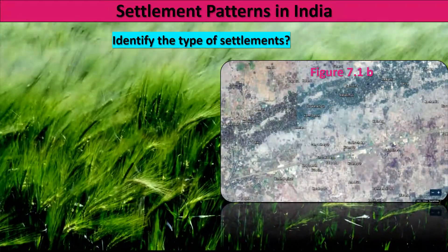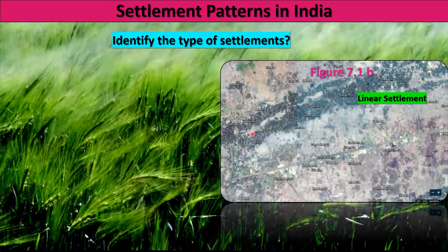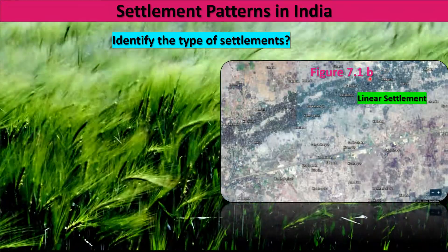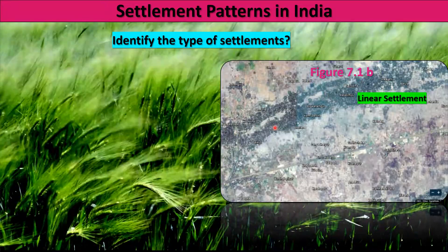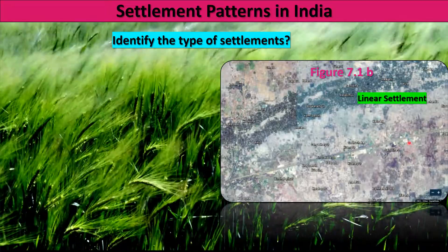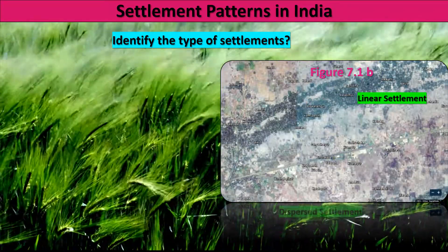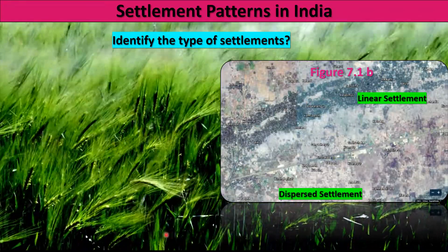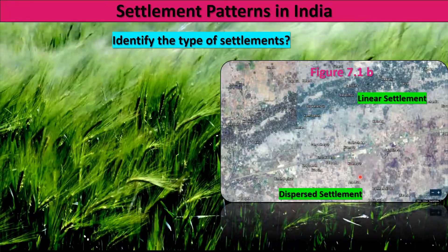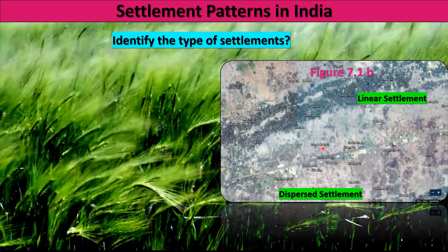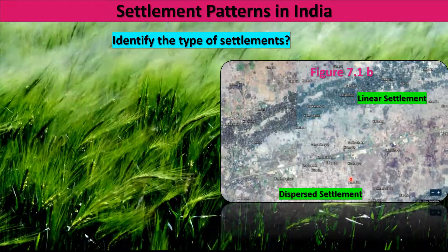The next type of settlement shown is the dispersed settlement. In the figure, we also see a linear settlement — houses are along the road, arranged in a line. Below that, we see a dispersed settlement because the houses are far away from each other. So in this particular figure we see two types of settlements: linear settlement and dispersed settlement.